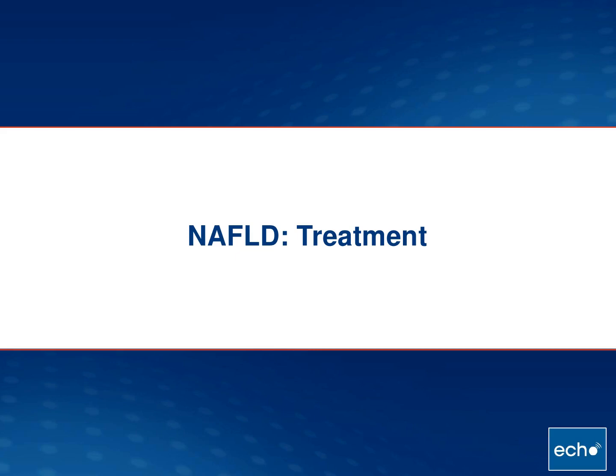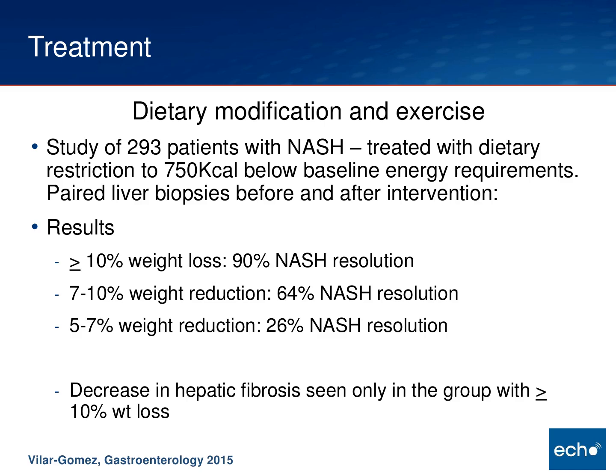If you've made the diagnosis of NASH, how do you treat it? The cornerstone is dietary modification and exercise. One study published several years ago looked at almost 300 patients with biopsy-proven NASH treated with dietary restriction to 750 kcal below basal energy requirements, with paired liver biopsies before and after. Those who had greater than 10% body weight loss — 90% of those individuals had complete resolution of NASH. Lesser amounts of weight reduction had less effect, and the only patients with improvements in fibrosis scores were those with the most weight loss, greater than 10%.